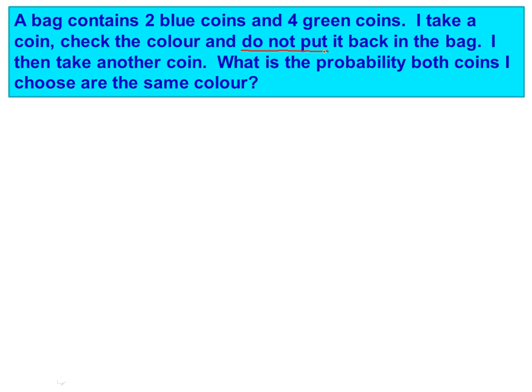So we begin the question the same as we did in the previous one. In this diagram, our options for our first choice are we can pick a blue coin or we can pick a green coin. And if I draw the bag to show you what would be there, for the green coins there are four of them, and blue coins there are two of them. So all together there's six coins. So the probability of a blue is two out of six and the probability of a green is four out of six.